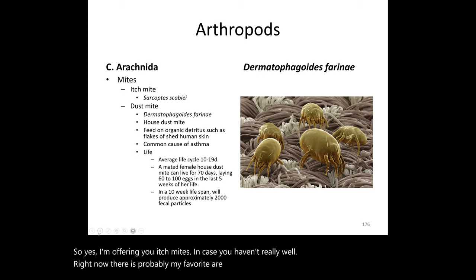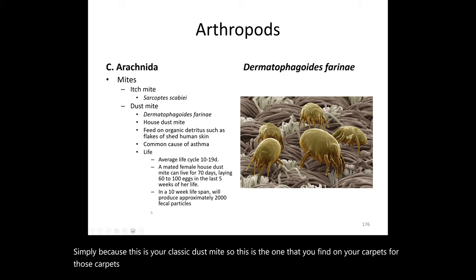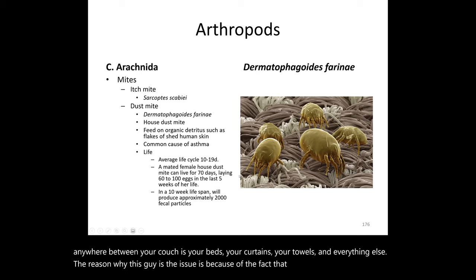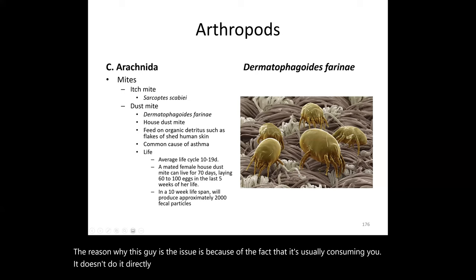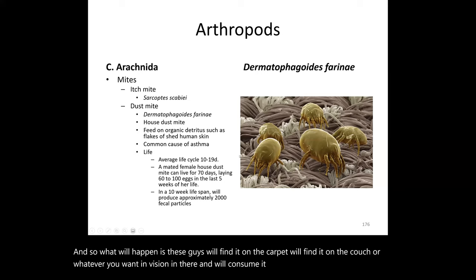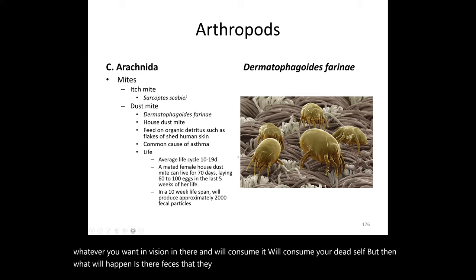Dermatophagoides — the dust mite — doesn't directly consume you. Instead, it survives off detritus: the dead skin cells falling off your body. These are found on carpets, couches, and other surfaces. The problem is that their feces are relatively toxic in a specific way — not dramatically dangerous, but capable of causing breathing problems.